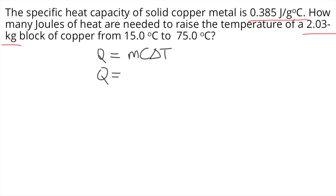In order to convert kilograms to grams, remember that 1 kilogram is equivalent to 1,000 grams. So you just need to multiply 2.03 by 1,000. So 2.03 times 1,000 is equal to 2,030 grams.